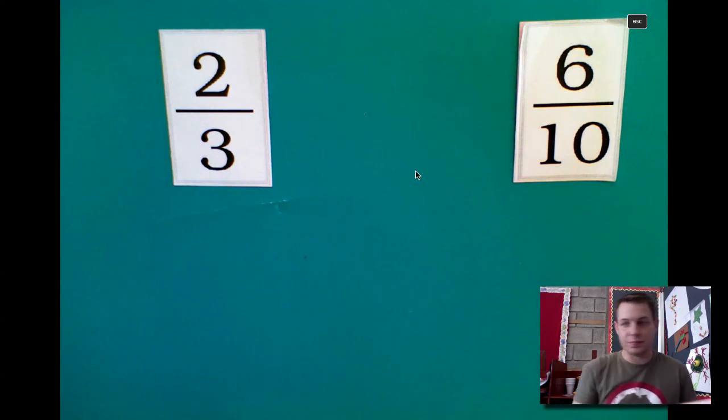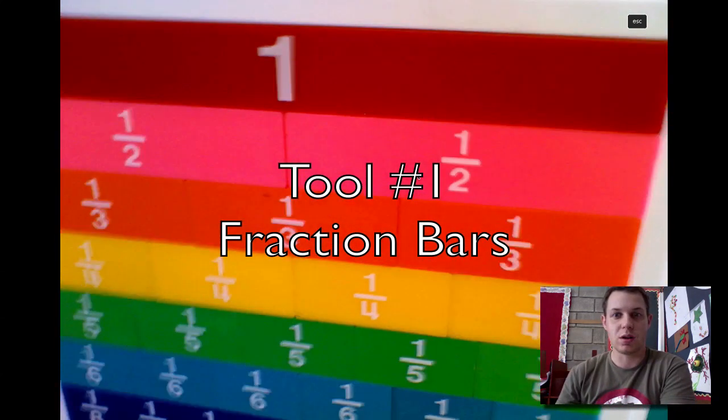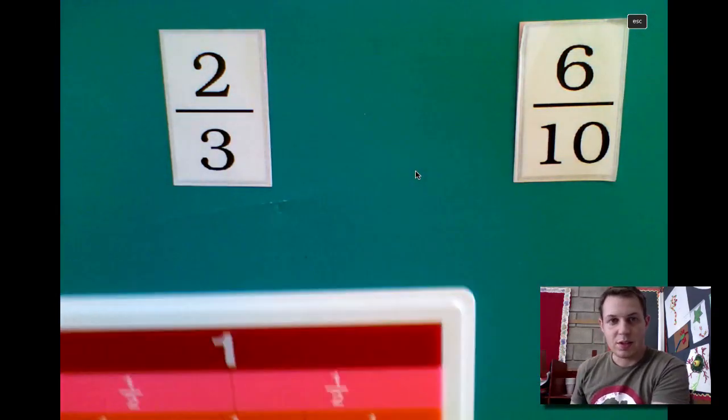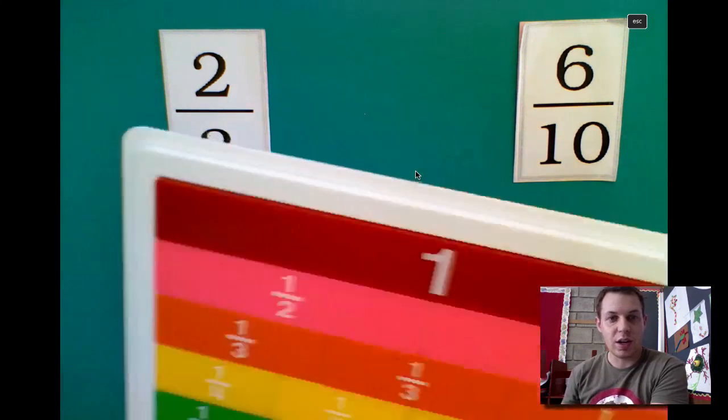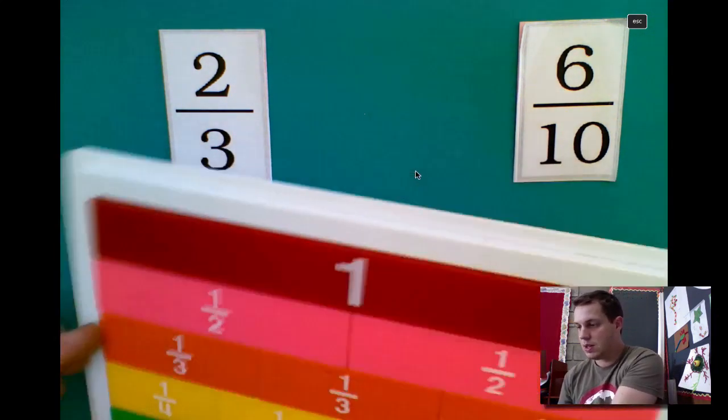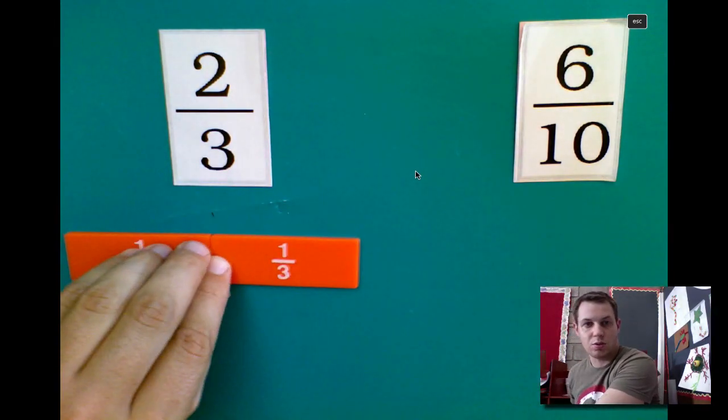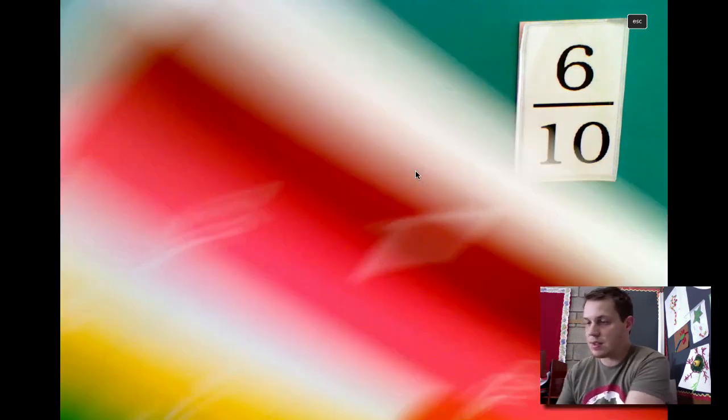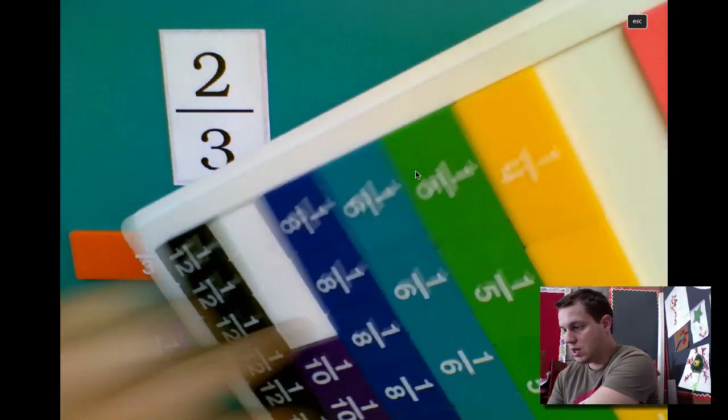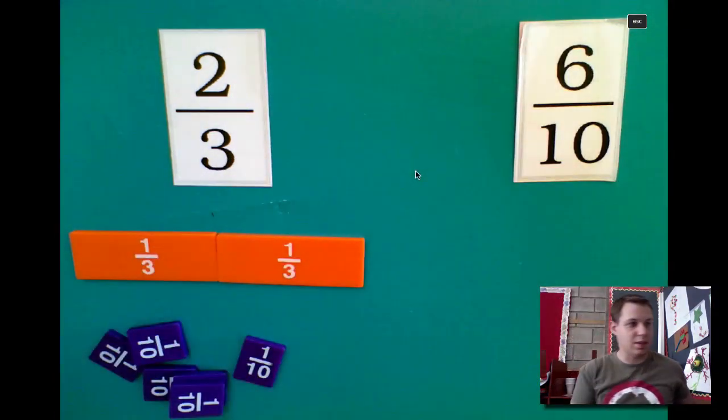The first tool we're going to look at are these nice little fraction bars. They're very colorful, you can take them apart, and they're a lot of fun. The first fraction I'm going to make is the 2/3. So I find my thirds and I take 2 of them: 1, 2, and there's my 2/3. 6/10, I come down here, find the tenths: 1, 2, 3, 4, 5, 6/10.